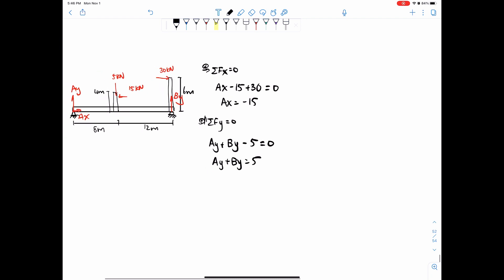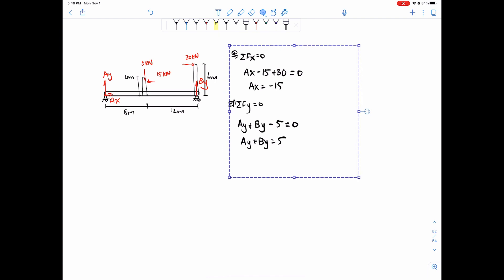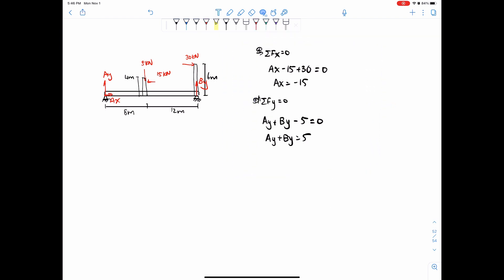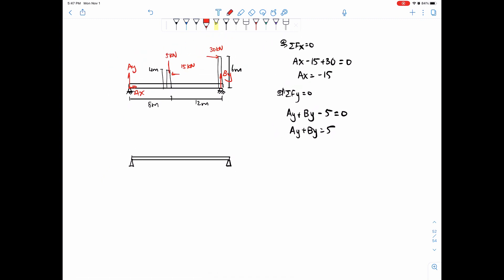So next we can do sum of moments. How do we look at this? We can actually just simplify this question into a simply supported beam. How do we do that? Well, first, if we take a look at the segment, the bottom segment right here, this load, this 5 kilonewtons, would transfer down and just act on the beam like this. Simple enough.